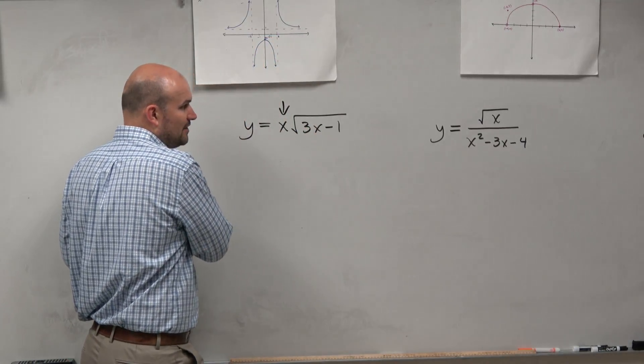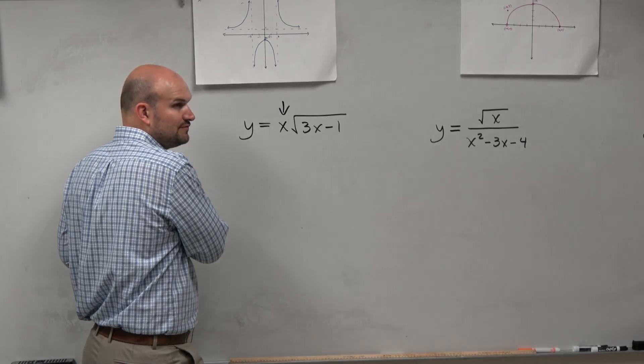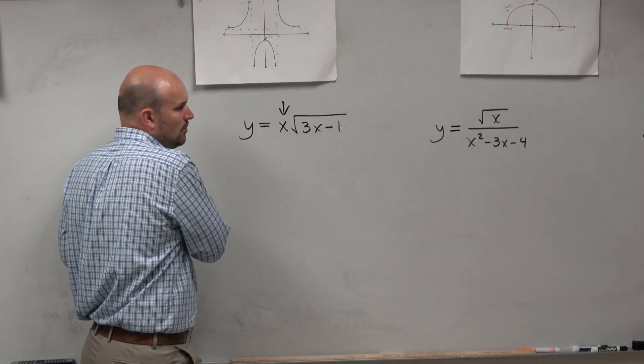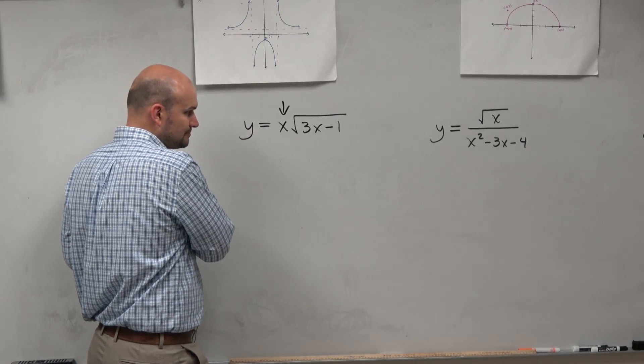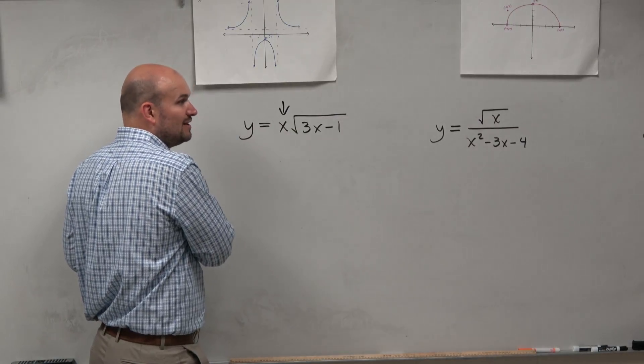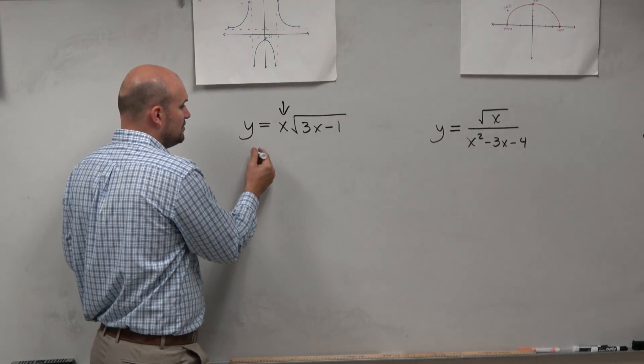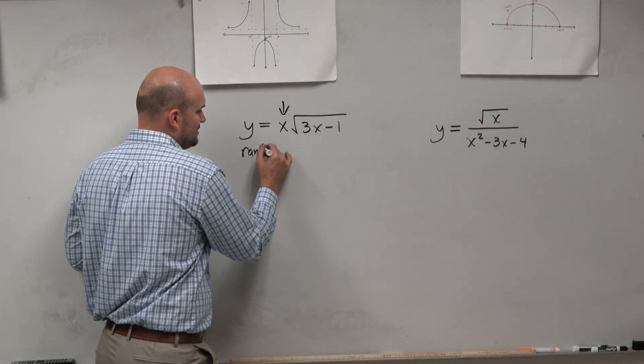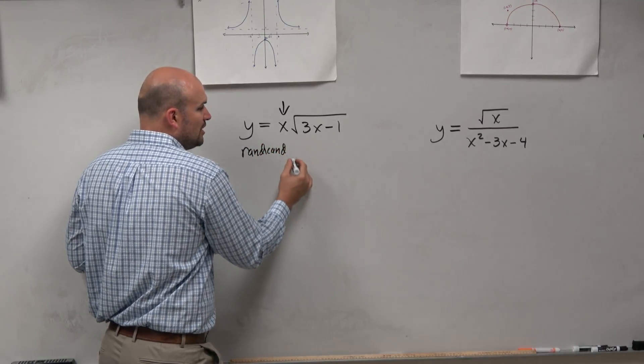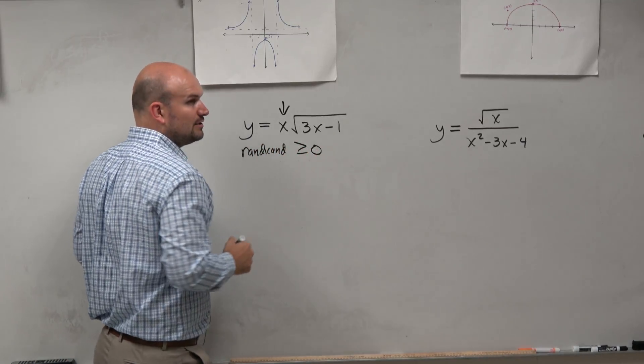Now when I look here, I have under the radical square root of 3x minus 1. So I know that everything under my radical has to be greater than or equal to 0. So what I'm going to do is just write—and this is written on the board as well—the radicand has to be greater than or equal to 0.